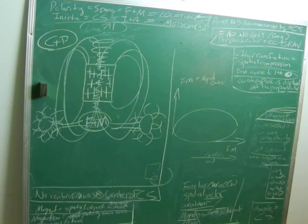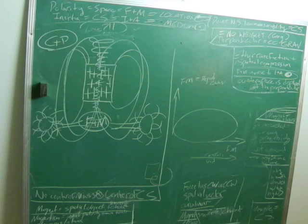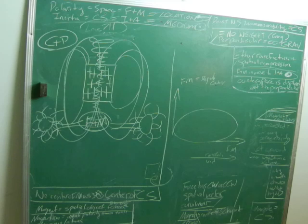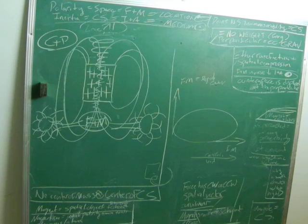Everything extrapolated regarding matter or mass — from the tiniest atom to large bodies — is an extrapolation of magnetism. The entire visible universe, the cosmos, is countered. Opposite polarity, by definition, is all divergence, all magnetism, inverse to counter space. Polarity equals space equals force and motion equals location. There's no such thing as weight without talking about the location and the medium. Weight is location-specific and medium-specific.